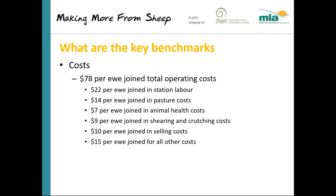You've got $10 per ewe joined in selling costs — to get rid of all her lambs and her wool — that's freight, commissions, yard fees, whatever is associated with selling the animal or wool. And then the rest, roughly $15, is for administration, accountancy, computers and general R&M — all the other costs in your business. They should all add up to $78.